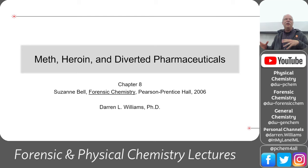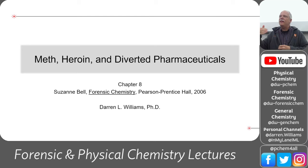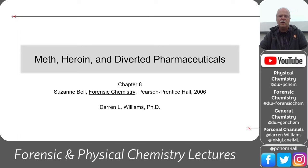Today we're going to be talking about methamphetamine, heroin, and diverted pharmaceuticals. It's not just to learn about these different chemicals, but to think about the chemical evidence part of the course. When we seize a drug, we have the active ingredient we can analyze, but think about all the other kinds of chemical evidence we would find in a clandestine lab. As a scientist, what other indicators of criminal activity might there be?